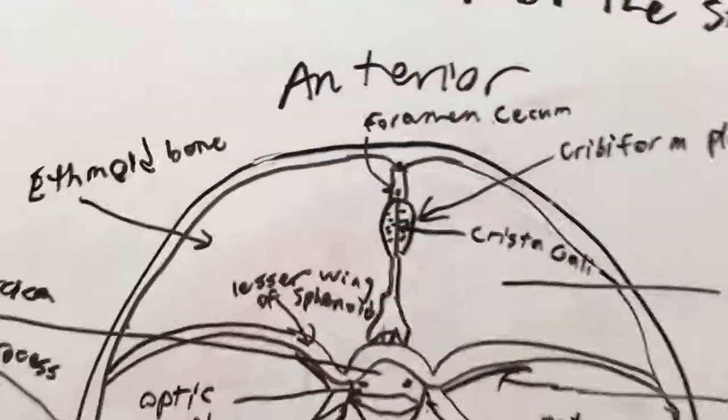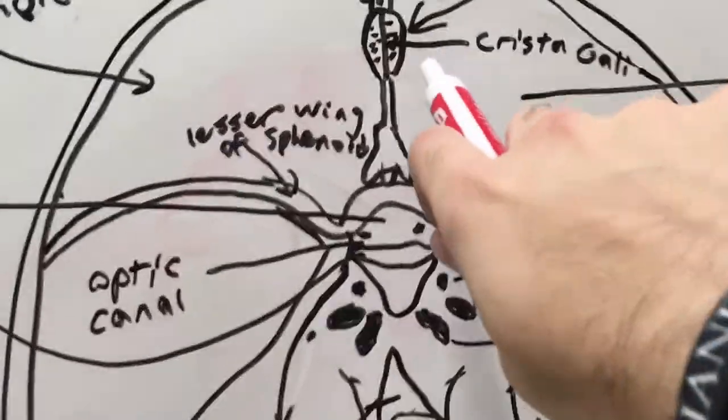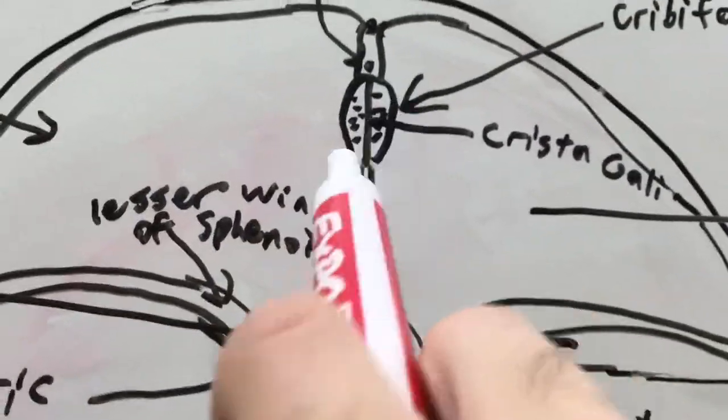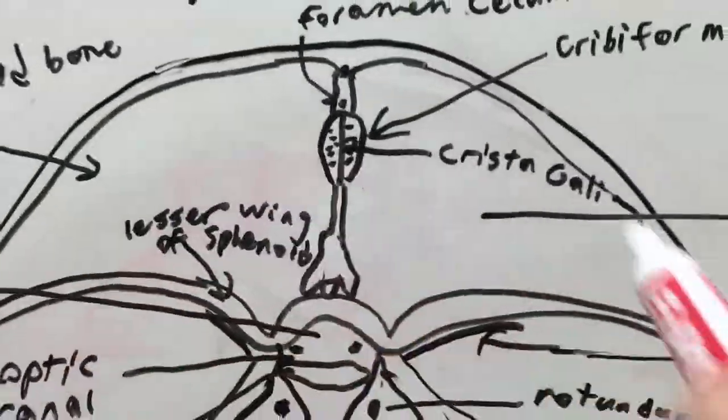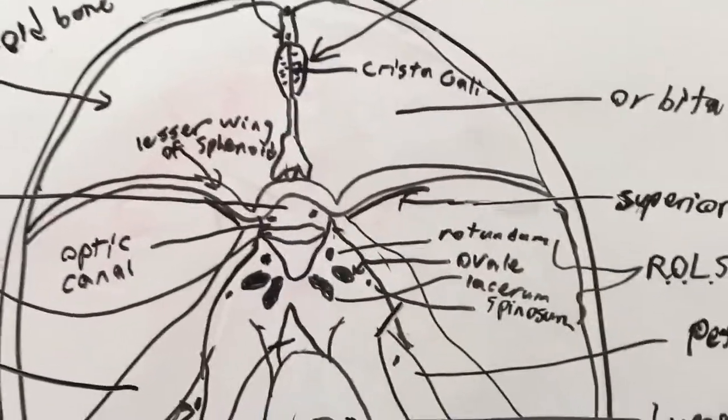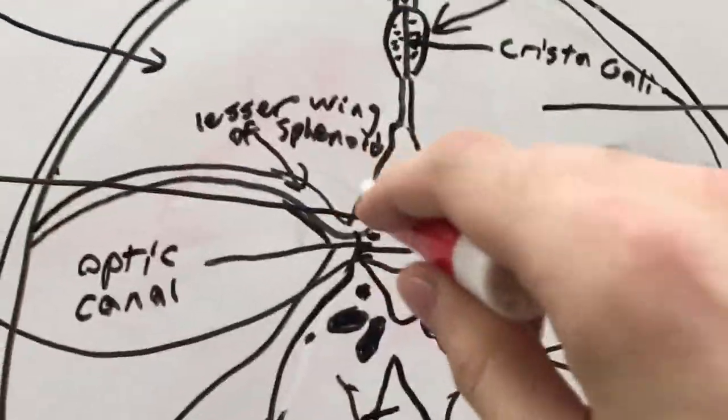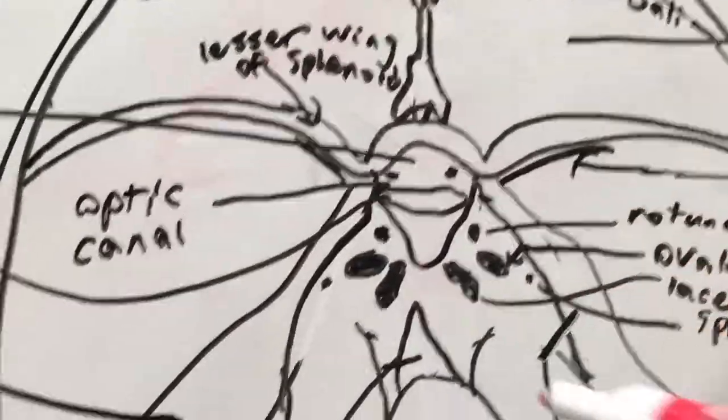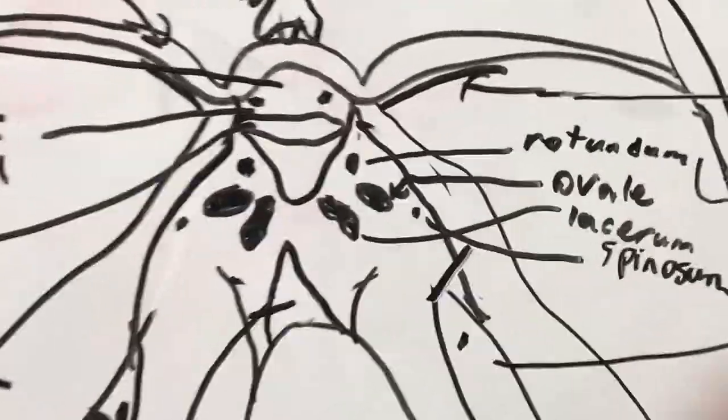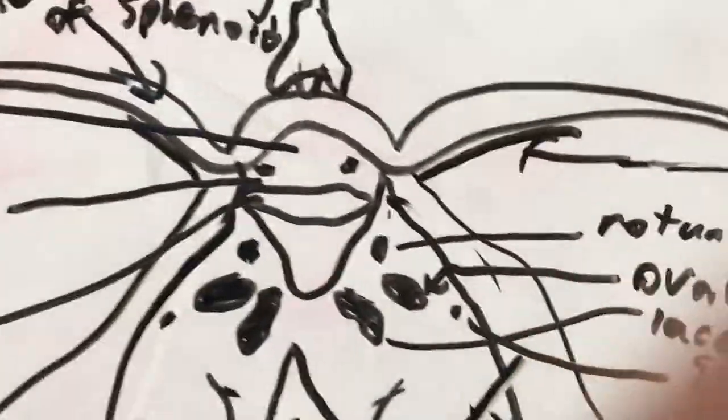So here we have the foramen cecum and we have the cribriform plate and the cribriform plate has the crista-galli and all these little foramen and that's where the olfactory nerve goes through. So this is all the ethmoid bone, this portion that separates the nasal cavity from everything else. And then here we have the lesser wing of the sphenoid bone. This is what separates the ethmoid from the sphenoid.